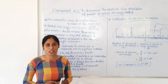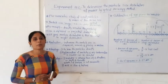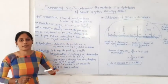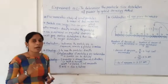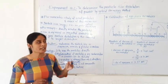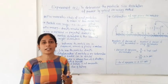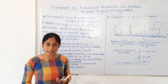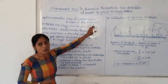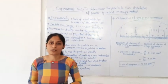First of all, let us discuss the basic introduction about this experiment. The first concept is micrometry. Micrometry is related to particle size distribution and particle size analysis. Micrometry involves the study of small particles of a few micron sizes. In this concept, we get a detailed study of small particles. The particle size should be in the range of microns, and we have to determine their particle size and particle size distribution.